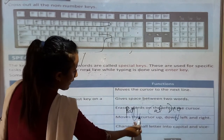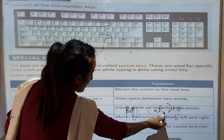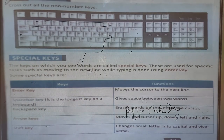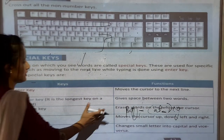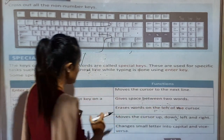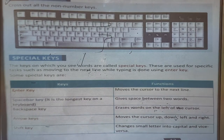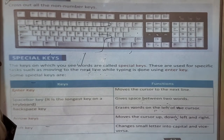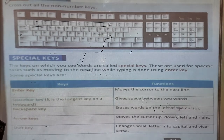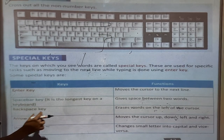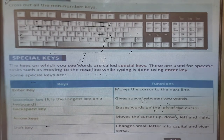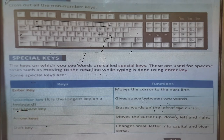For example, B, A, T — 'Bat' — then a space — then C, A, T — 'Cat'. There is some space between them. So the space bar gives you that space. Backspace: it erases words on the left of the cursor. Backspace key helps you to erase. When you have made any mistake, you can erase it with the backspace key.